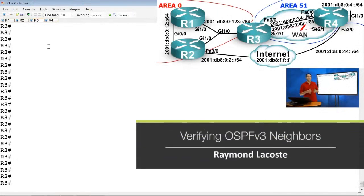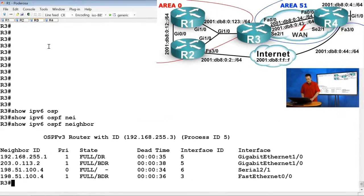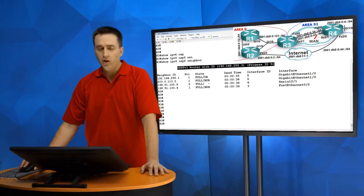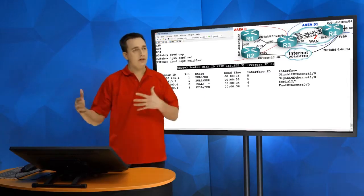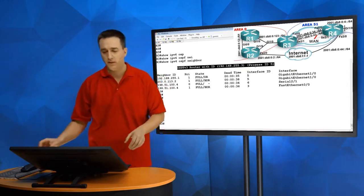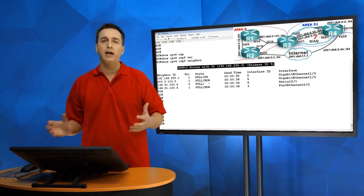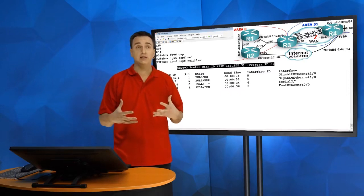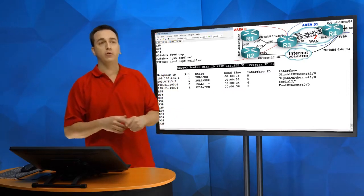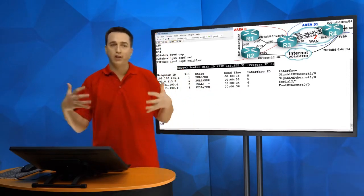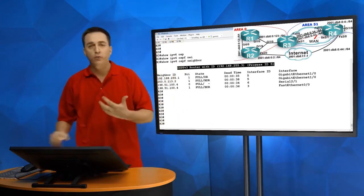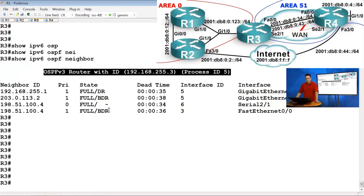To verify OSPFv3 neighbor adjacencies, type 'show ipv6 ospf neighbors'. The output lists router IDs, process IDs, and neighbor state. If multiple OSPFv3 processes exist, they all appear here with their process ID. Keeping the process ID consistent across all routers — even though it doesn't have to match — makes it much easier to troubleshoot, since you know that process ID 5 on R1, R2, R3, and R4 all belong to the same routing domain.